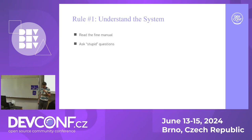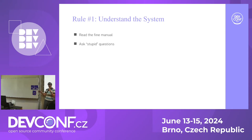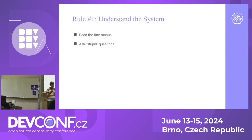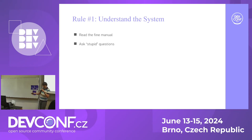Rule number one: Understand the System. This rule is basically about, as it says, understanding the system. You read the manual, or in my case as a DevOps engineer, it's about asking stupid questions. Because you cannot debug something if you don't understand the system. The first thing you need to know is what is actually the correct behavior, so you know the difference between what should happen and what is happening. If you don't know what's right or wrong, how do you know there is a bug?